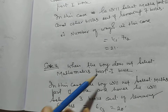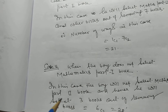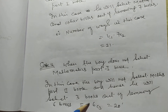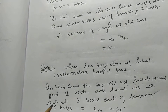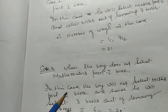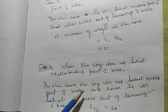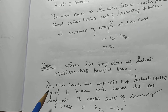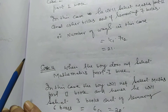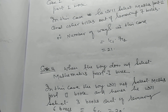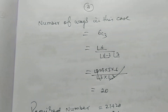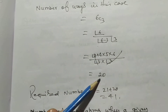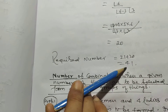When the boy does not select Mathematics Part 1, he will also not select Mathematics Part 2. Hence he selects 3 books out of the remaining 6 books. Number of ways = 6C3 = 6!/(3!×3!) = 20. Therefore, required total number of ways = 21 + 20 = 41.